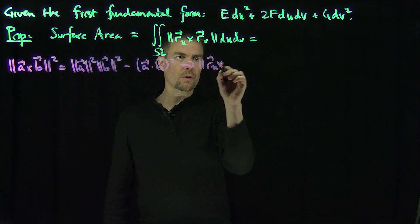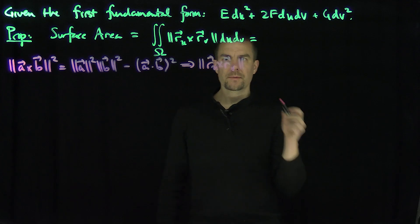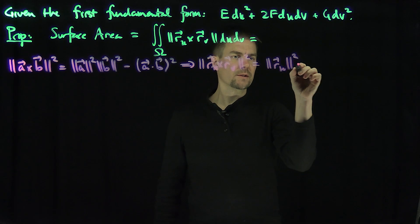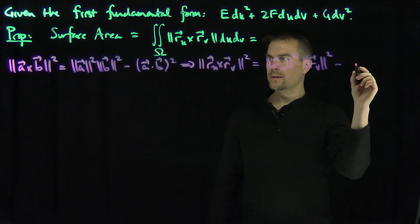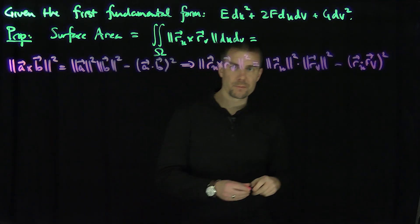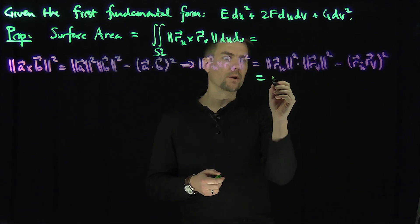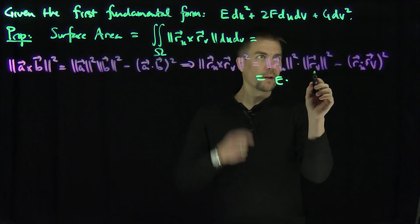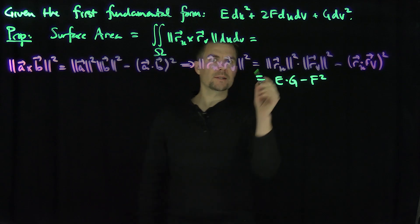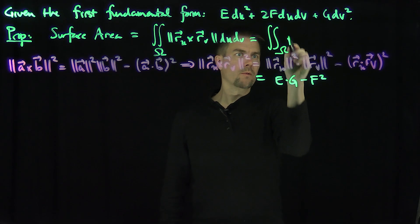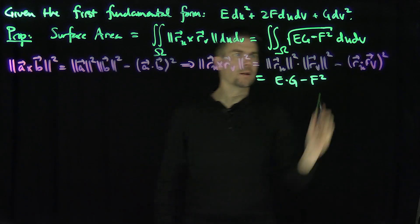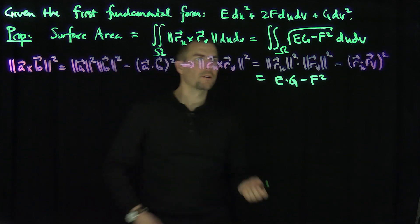Applying this identity, |r_u cross r_v|² equals |r_u|² times |r_v|² minus (r_u dot r_v)². Now, |r_u|² is r_u dot r_u, which is exactly E; |r_v|² is G; and r_u dot r_v is F, so we subtract F squared. Therefore the surface area is the double integral over Ω of the square root of EG minus F squared, du dv. This gives a formula for surface area in terms of the first fundamental form.